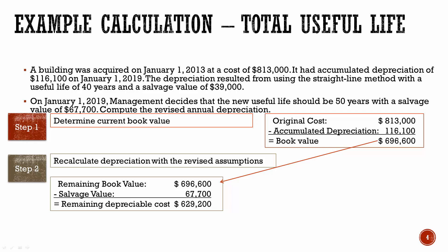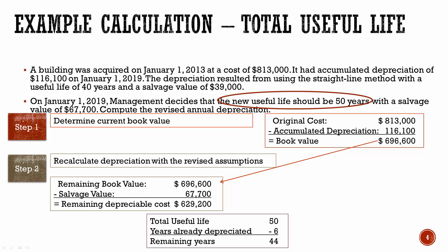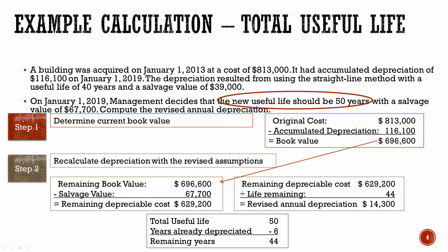Now we need to take that and divide it by the remaining useful life. They told us the new total useful life should be 50 years, so we need to determine the remaining amount. If the total life is 50 years, we can determine that six years have already gone by — they bought it on January 1, 2013, and now it's January 1, 2019, so they've depreciated it for 2013 all the way through the end of 2018. That's six years, so the remaining useful life is 44 years. We take our remaining depreciable cost, divide it by the life remaining, and the new revised annual depreciation is $14,300.